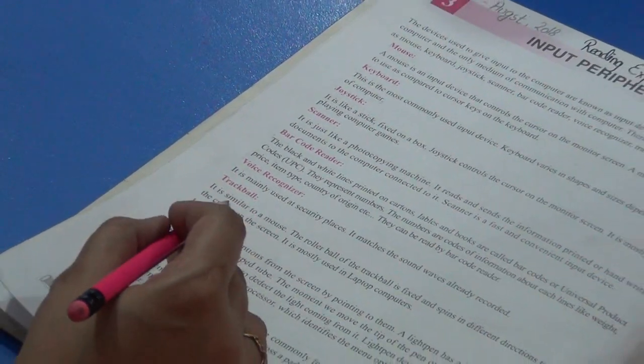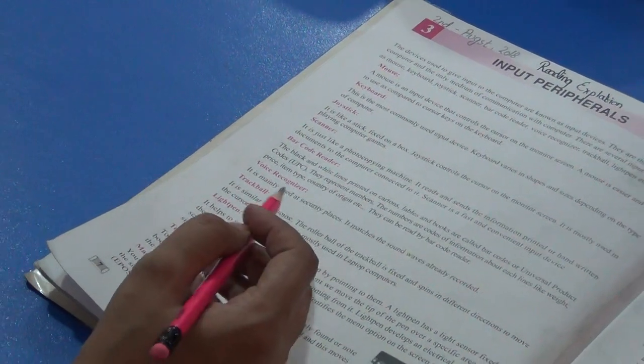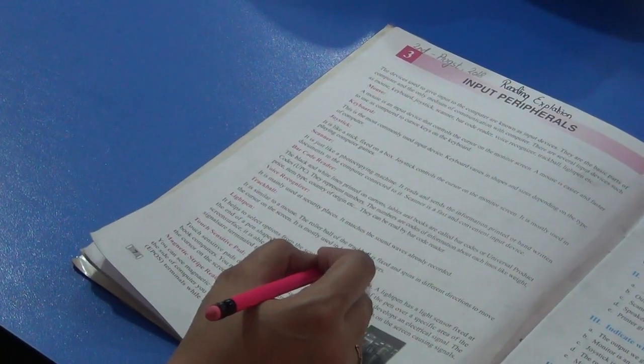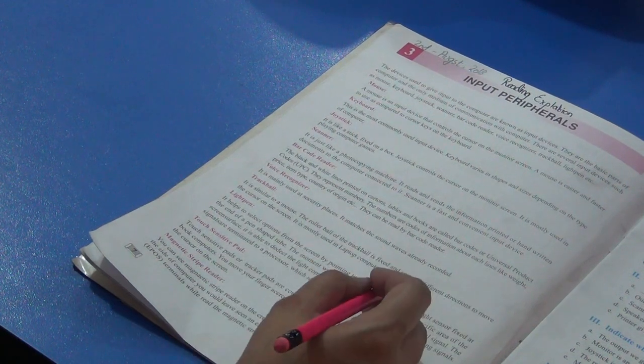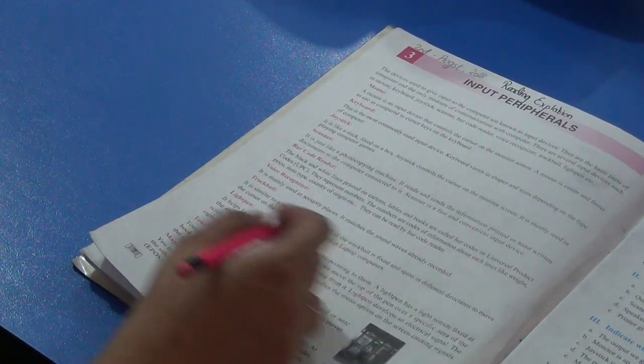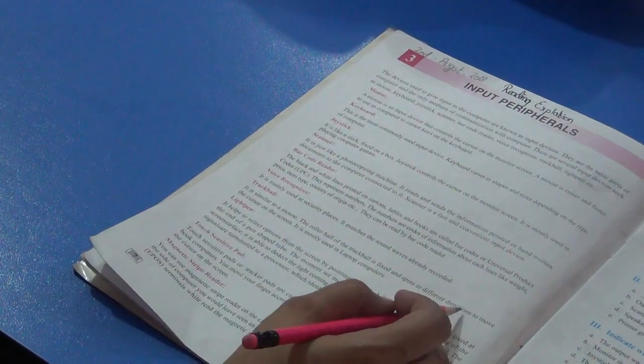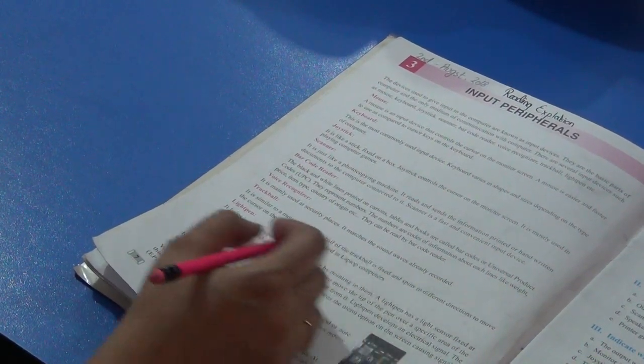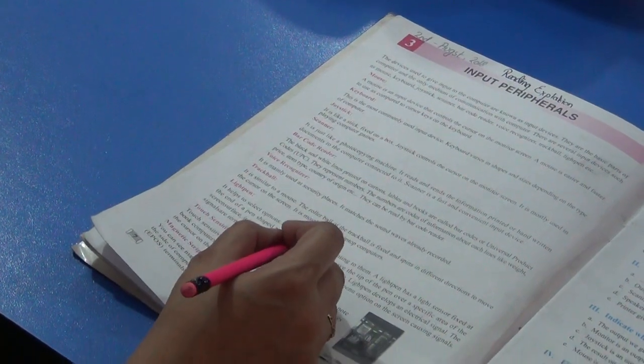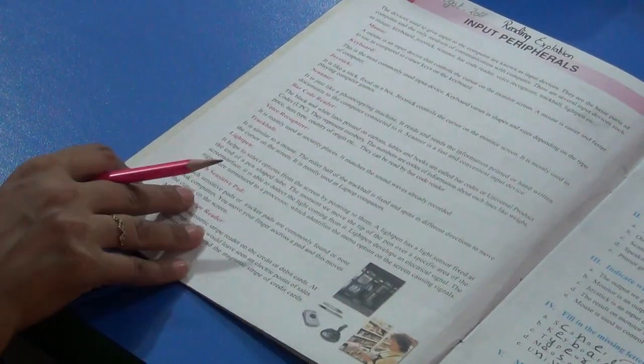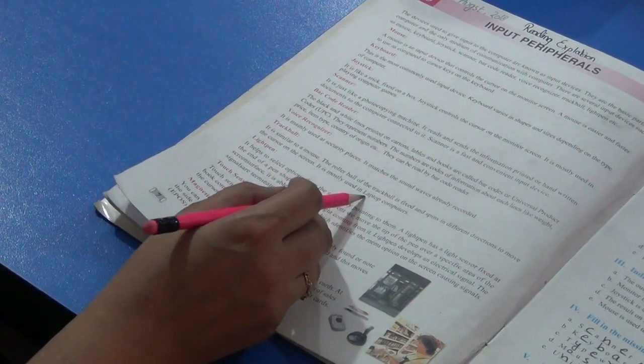Trackball. It is similar to mouse. The roller ball of the trackball is fixed. It is rolled and spins in different directions to move the cursor on the screen. Through this we control the cursor. It is mostly used in laptop computers.